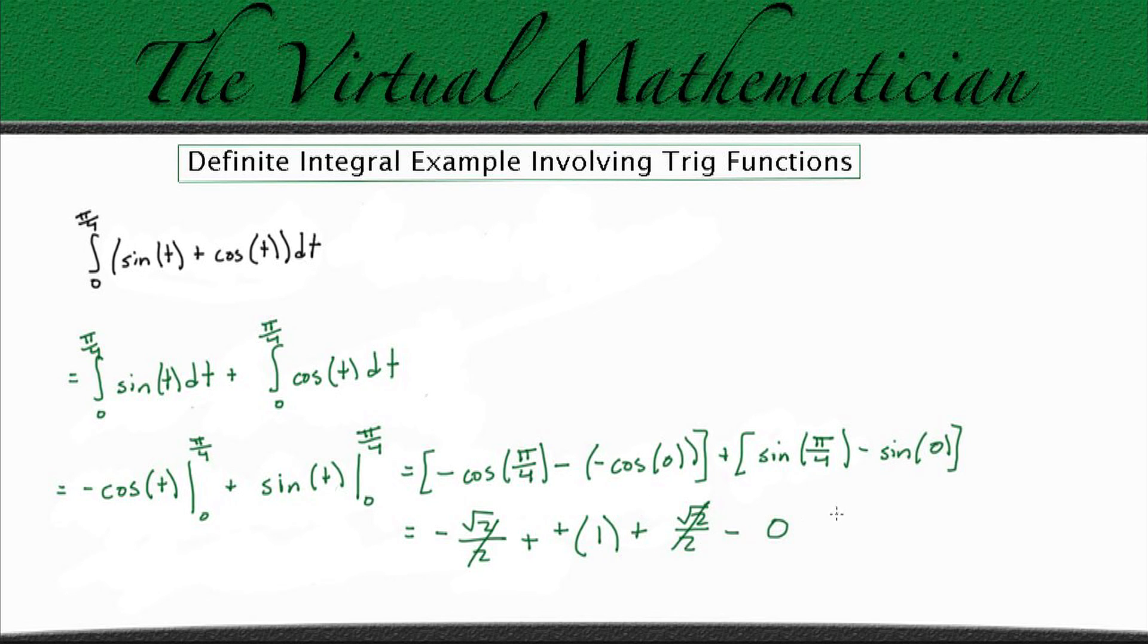And then we're left with minus negative 1, which is the same thing as plus positive 1, minus 0. So plus 1, minus 0 is just going to leave us with 1. And that is going to be the final answer for this example.